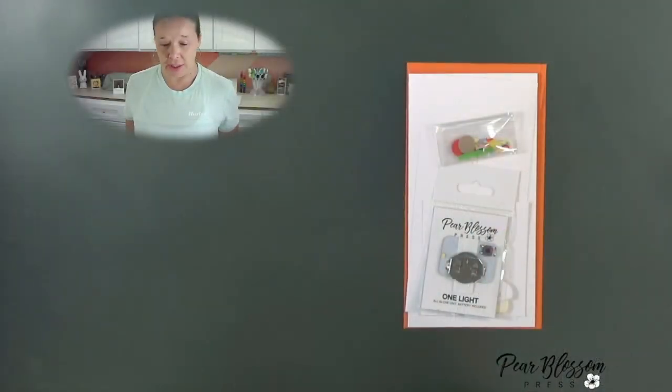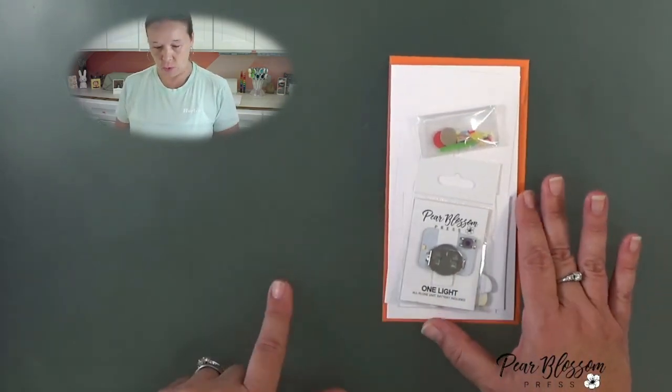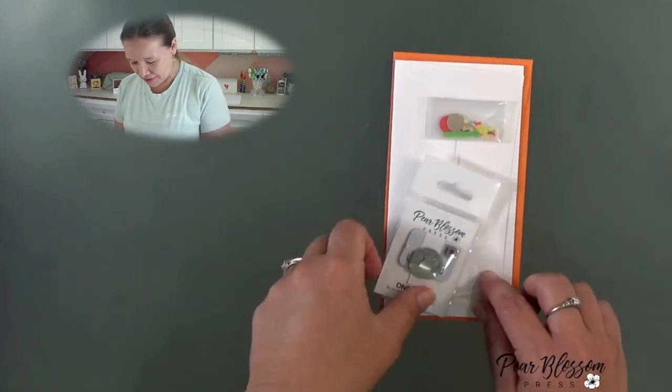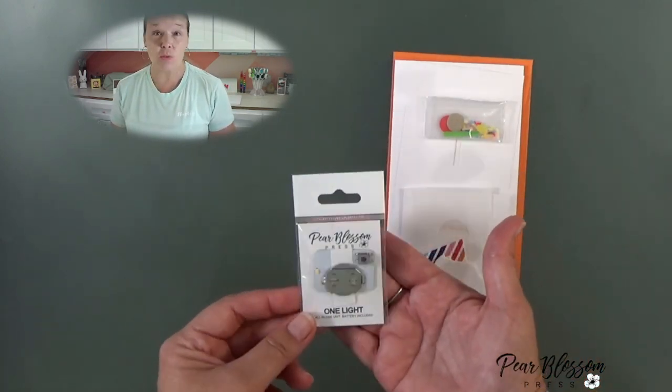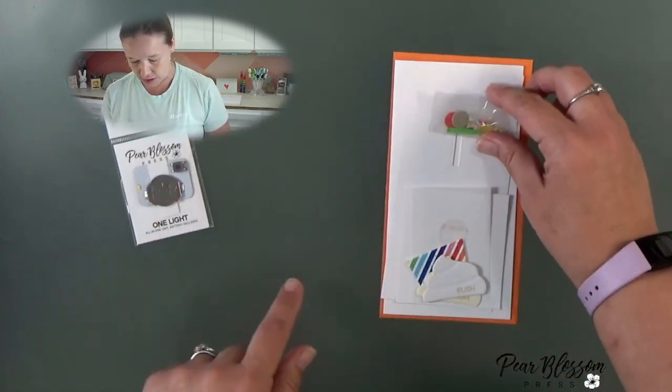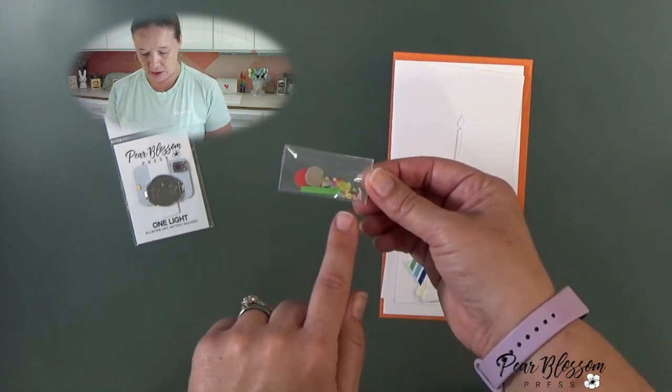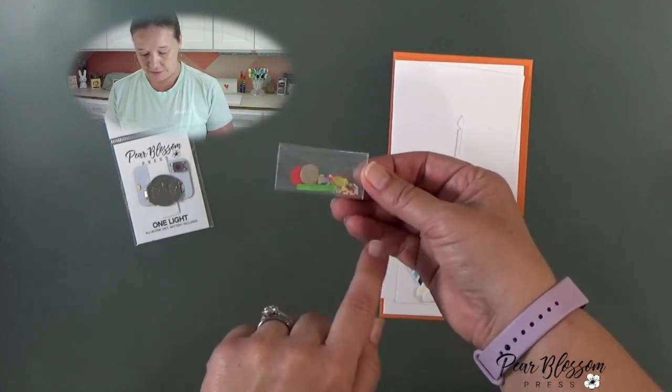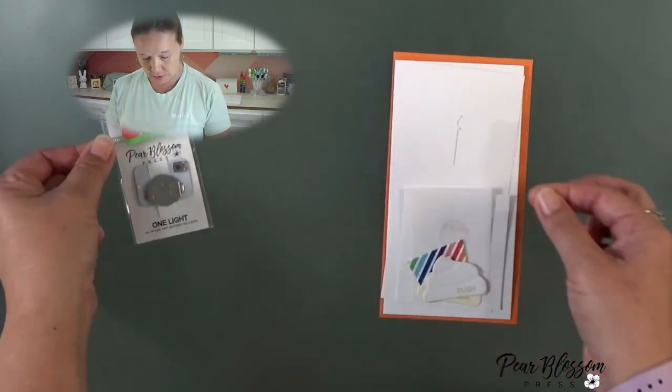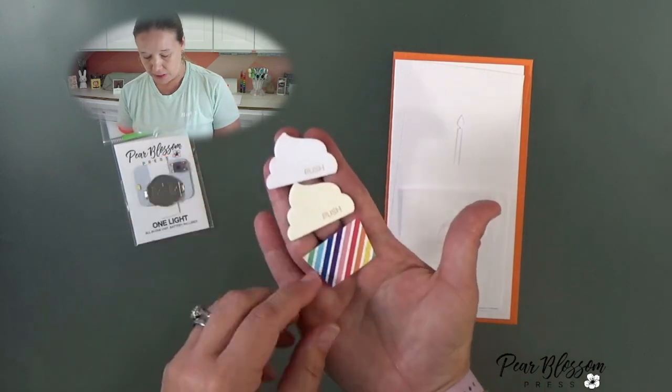So let's talk about what's included in your kit. You'll have a coupon with a finished photo of the project and then inside we've got a one light. This is what's going to actually light up your card. Set this aside, we'll use that in a few minutes. You've got a little packet that has cherry pieces, a little candle, a yellow candle flame, and some clay sprinkles. Those are all to decorate, and then you have a couple of cupcake pieces.